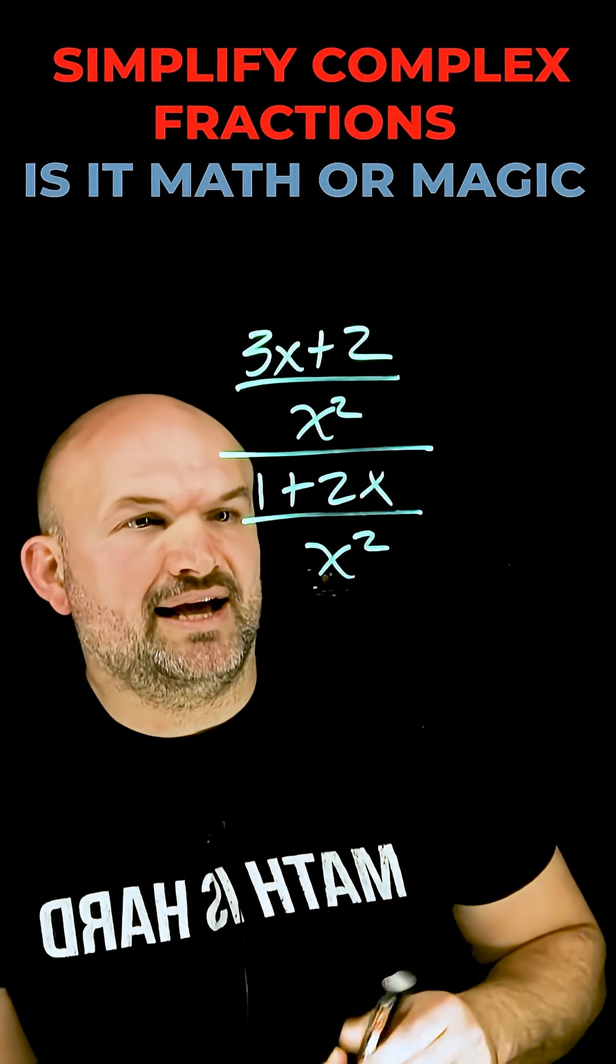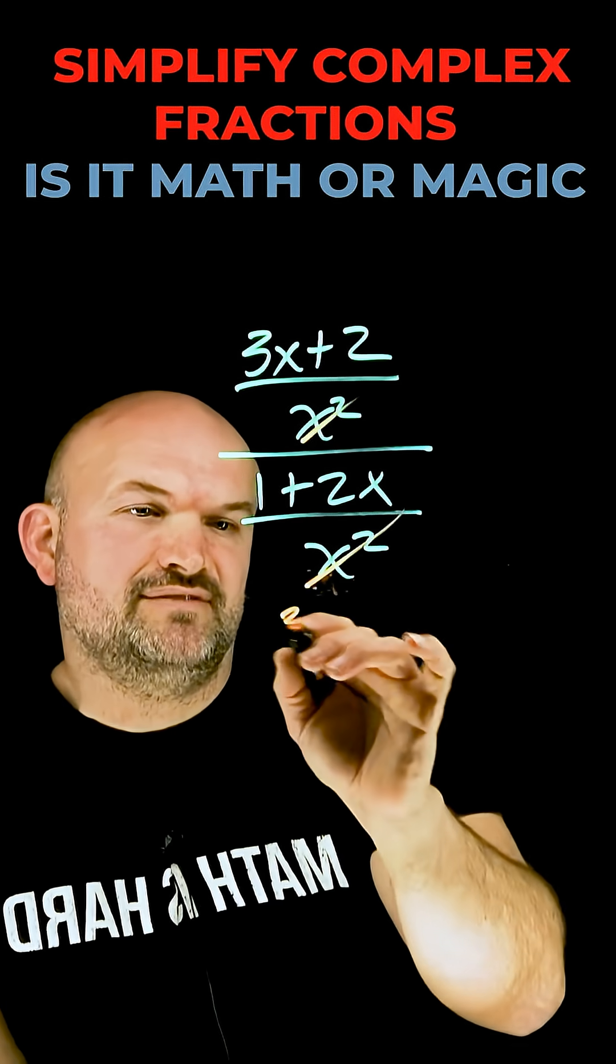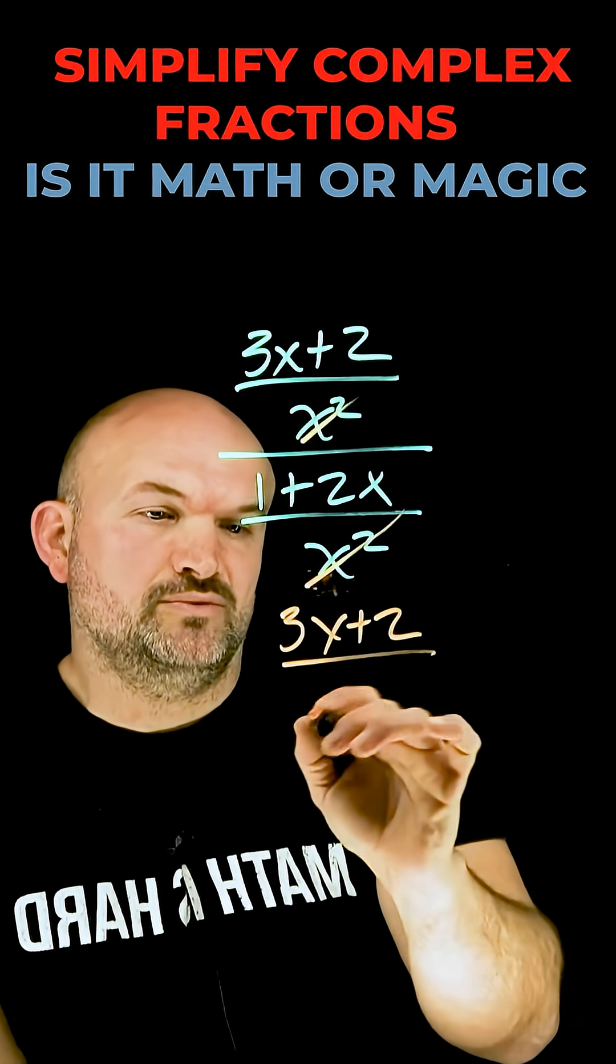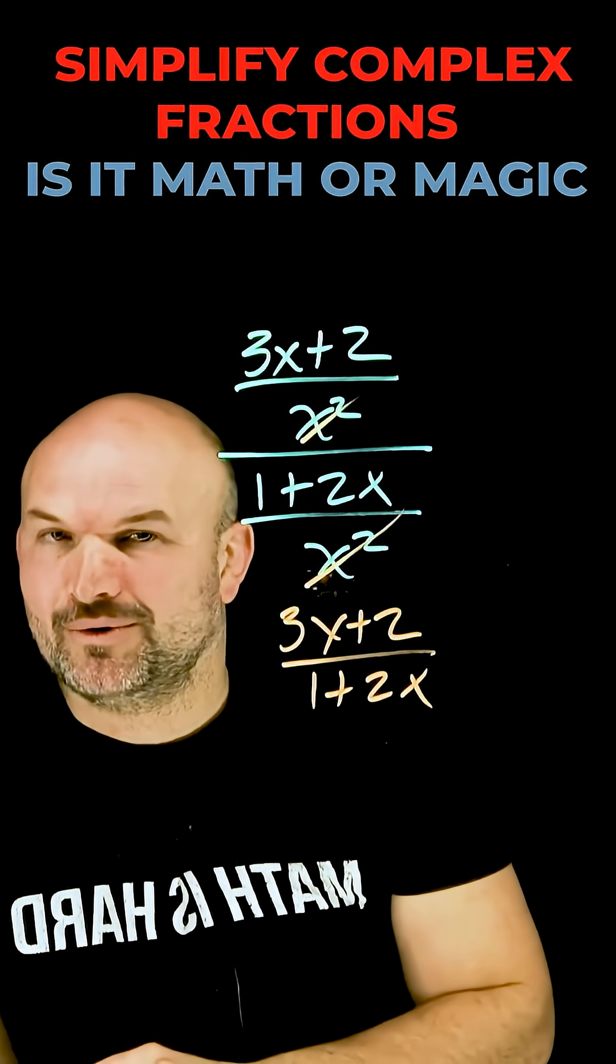I recently solved the problem and went ahead and just divided out my x squareds to give the final answer of 3x plus 2 divided by 1 plus 2x. Now, is that magic or is that math?